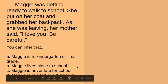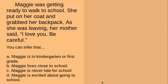So let's look at our choices. You can infer that: A, Maggie is in kindergarten or first grade; B, Maggie lives close to school; C, Maggie is never late for school; or D, Maggie is excited about going to school.